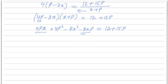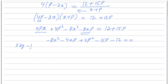We can simplify like terms. Writing in order with x squared first: minus 8x squared, and combining the xp terms gives minus 4xp, plus 4p squared. Bringing the right-hand side over gives minus 15p minus 12 equals 0. To get rid of the negative leading coefficient, multiply by negative 1: 8x squared plus 4px minus 4p squared plus 15p plus 12 equals 0.